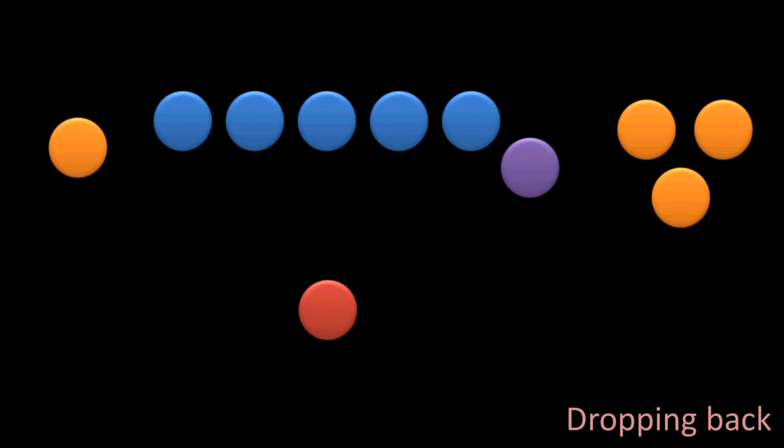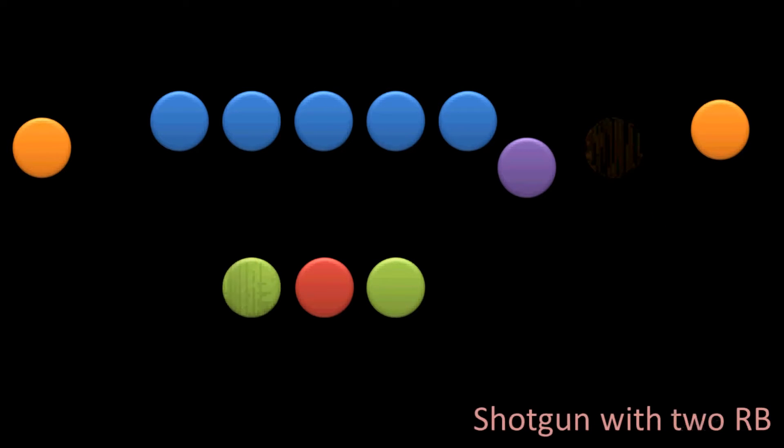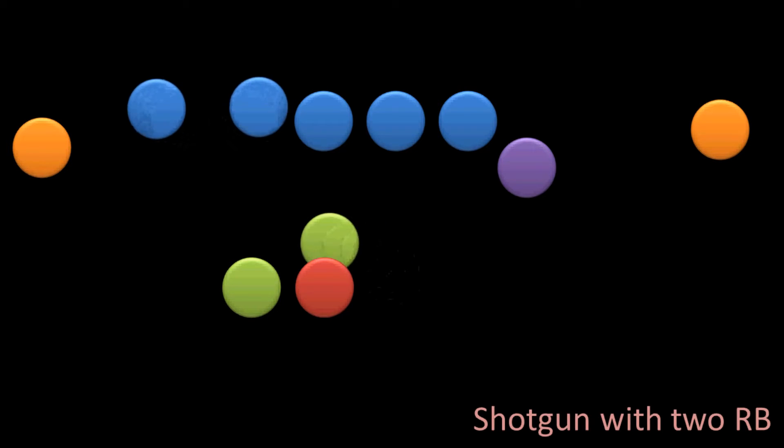So, lining up in the shotgun formation makes it easier to pass and is often used by teams on passing plays. But it doesn't have to be. So, there can be a running back, as we saw in that photo, or two beside the quarterback while he's in shotgun, and so that after the quarterback gets the snap, he can just turn and hand the ball off to his running back.